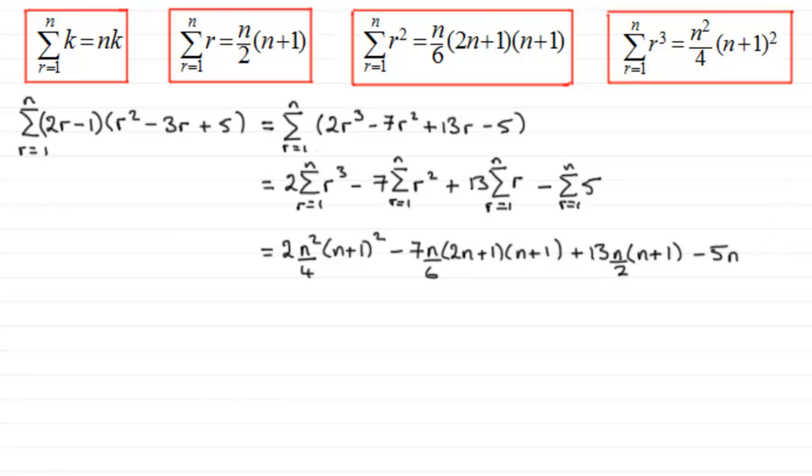Now we just need to simplify this. You could leave it like this, I suppose, but it's generally not a good idea. We should be able to see how we can simplify this. We can divide this term here by the 2, and there's nothing else we can do here, so I would take out a common factor. I would take out n as a common factor on the top.